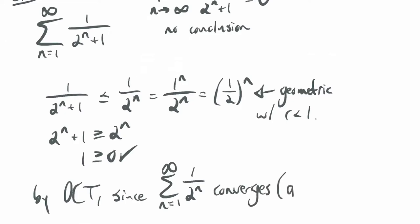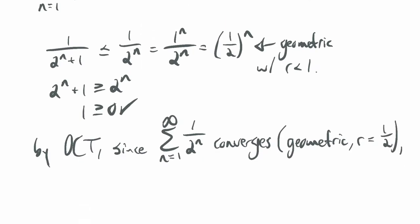I need to convince you that 1 over 2 to the n is geometric. I can write this as 1 to the n over 2 to the n, which by properties of exponents equals (1/2) to the n power — so it's geometric with r equals 1/2, less than 1, and therefore convergent. By the direct comparison test, since the series n goes from 1 to infinity of 1 over 2 to the n converges (geometric, r equals 1/2), this series converges.